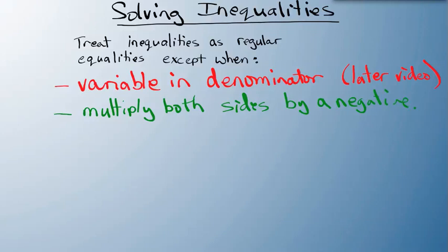A quick and dirty example of that is, if I have negative 2x is greater than 4, if I divide both sides by a negative 2, what you have to do is you have to flip that equality sign.